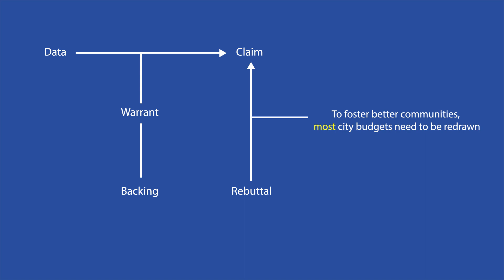A few other qualifiers are: always, certainly, probably, sometimes, and never. By splitting an argument into its components, one can judge how well the parts work together, and consequently the strength of the argument.